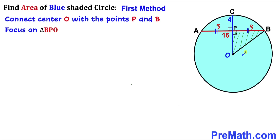Let's focus on triangle BPO. OB is the radius of the blue circle — let's label it lowercase r. OC is also the radius, so OC equals r. Since CP is 4 units, the length OP is going to be r minus 4.